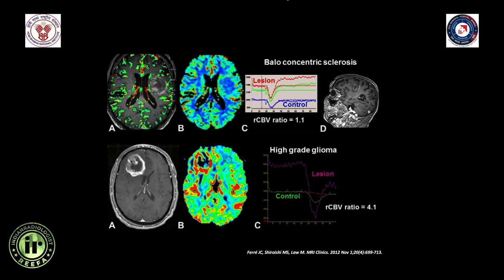Another example from literature shows a lesion with irregular peripheral enhancement that is hypoperfused on perfusion-weighted imaging — implying either a non-tumorous pathology or a low-grade neoplasm. This was a demyelinating lesion (Balo's concentric type of multiple sclerosis). In contrast, a heterogeneously enhancing lesion in the right frontal lobe showing areas of hyperperfusion with rCBV of 4.1 was a glioblastoma.